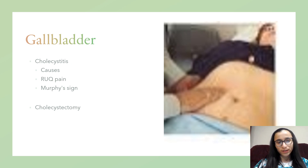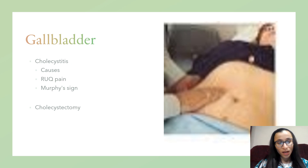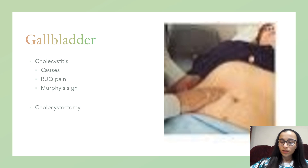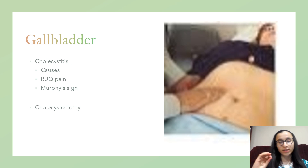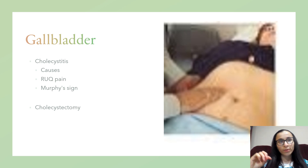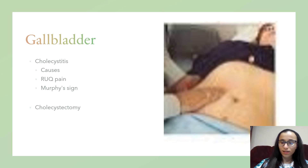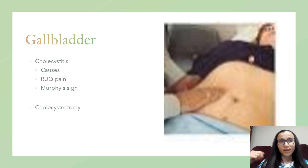First we're going to be talking about the gallbladder. The main thing you should know is cholecystitis — 'itis' means inflammation, so it's an inflammation of the gallbladder. Causes include gallstones. The gallbladder is located in the right upper quadrant, so the person will come in with right upper quadrant pain — that's specific to the gallbladder. It could be referred to the right shoulder or scapula, but look for the keyword right upper quadrant pain. Usually they ate fatty foods one to three hours before, because the gallbladder processes bile to break down fat.